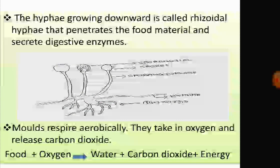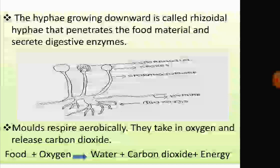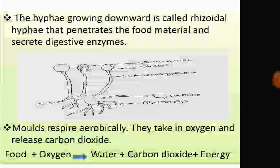The hyphae that grows downward is called rhizoidal hyphae. These rhizoids penetrate food materials to get nutrition. The rhizoidal hyphae secretes digestive enzymes, which break down complex food materials into simpler forms. These simpler substances are then absorbed by the hyphae.